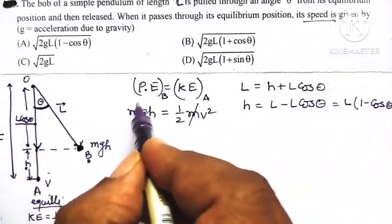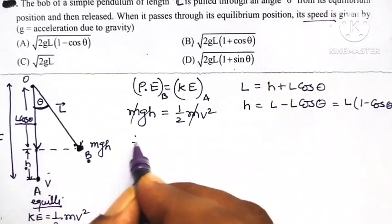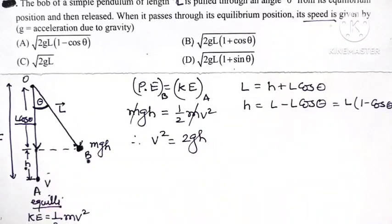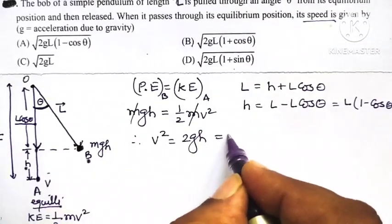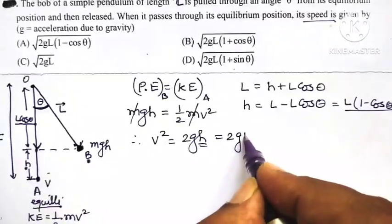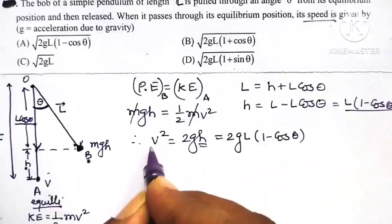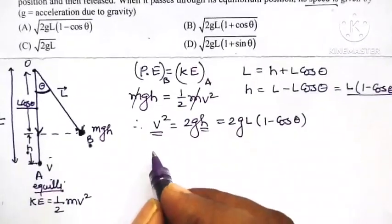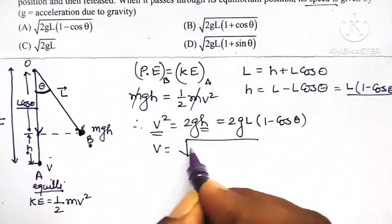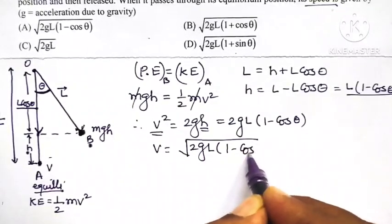The m on both sides gets cancelled. Therefore, v squared equals 2gh, which equals 2g times L(1 - cos theta). Taking the square root, v equals square root of 2gL(1 - cos theta).